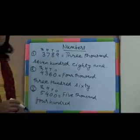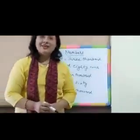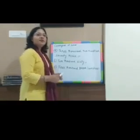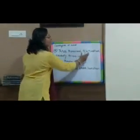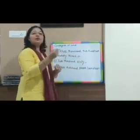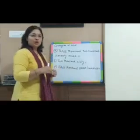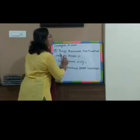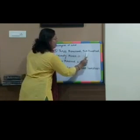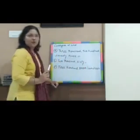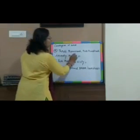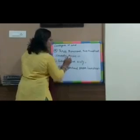Hope you enjoyed this video. Thank you. After converting the number into word form, now we will do the opposite of that. Now, we will convert the word form into the numeral form. Let's take an example: three thousand two hundred and seventy-three — 3,273.